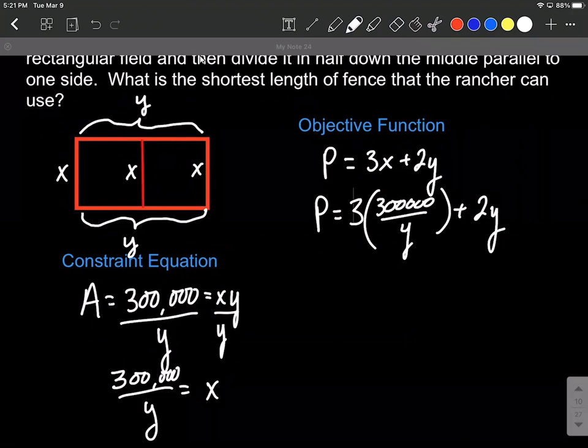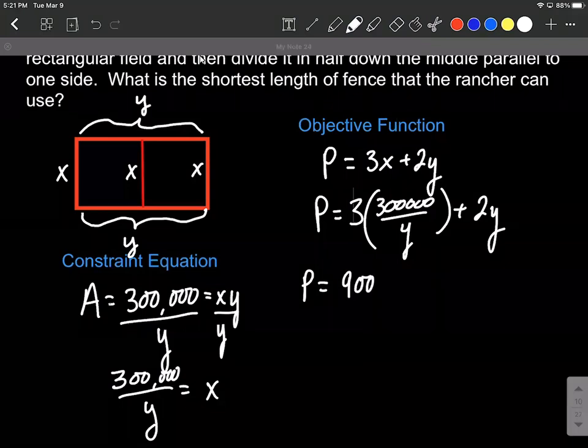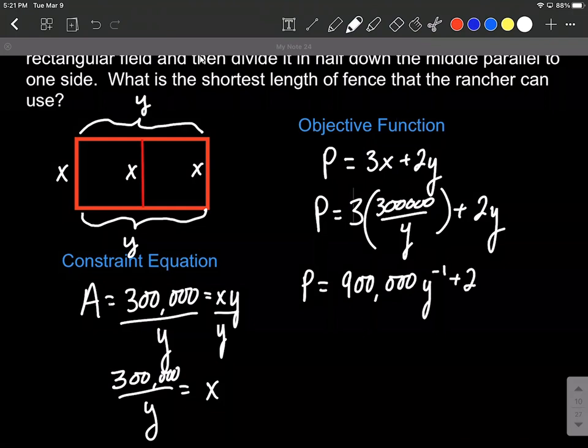A little bit of rearranging here before we take the derivative and try to find critical values. Simplifying down, I'm going to do 3 times 300,000 is 900,000. And instead of having that over y, I'm going to write this as y to the negative first power because it'll be easier to take the derivative if it's written as a power that way.